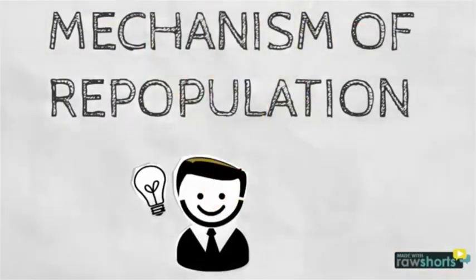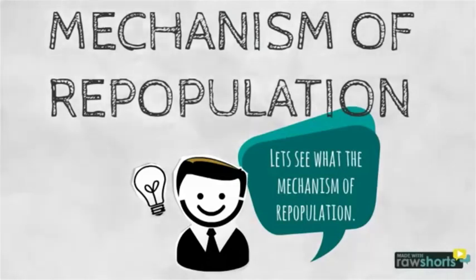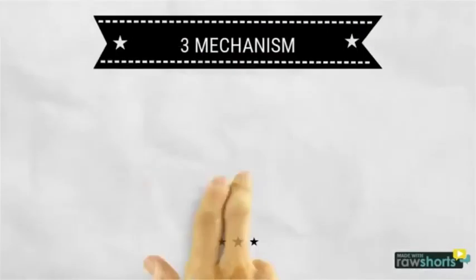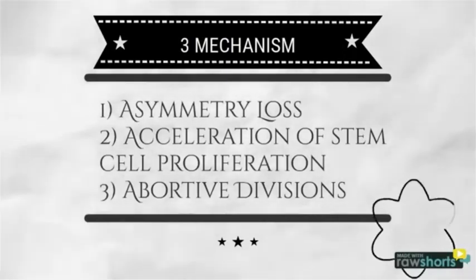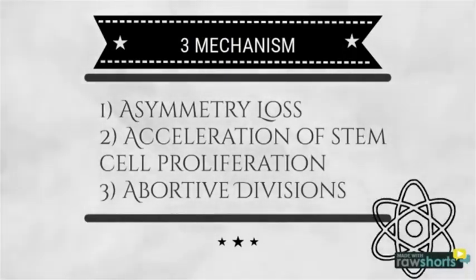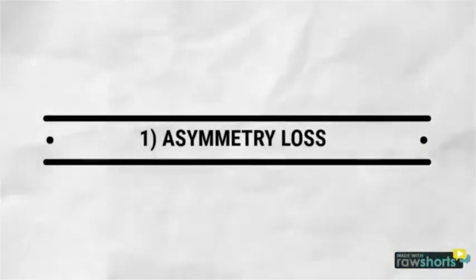The mechanism of repopulation can be described by the following three: asymmetry loss, acceleration of stem proliferation and abortive divisions. First, let's take a look on asymmetry loss.